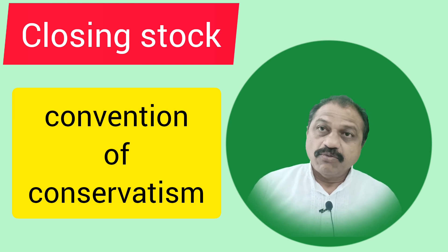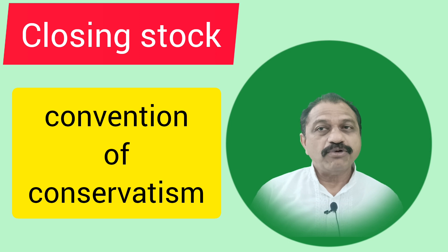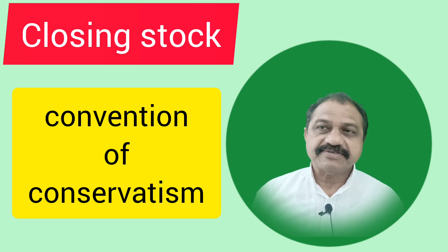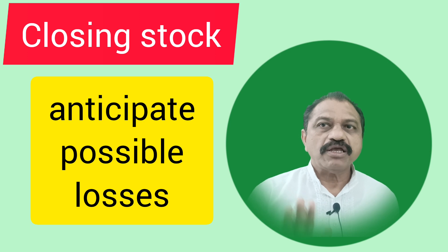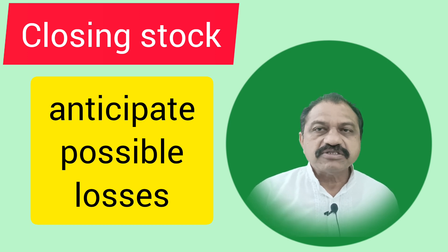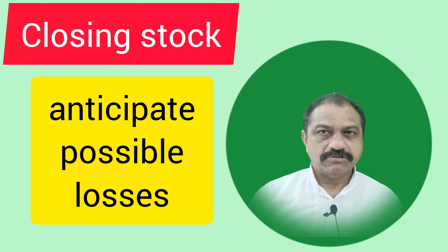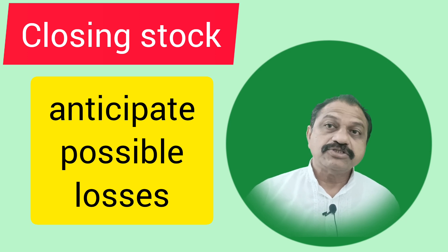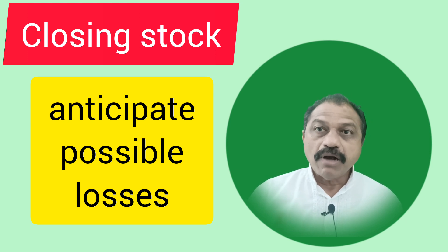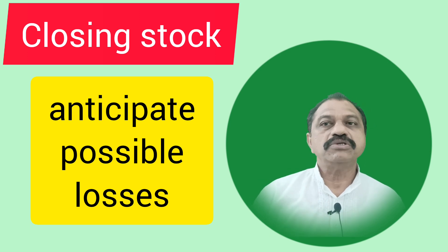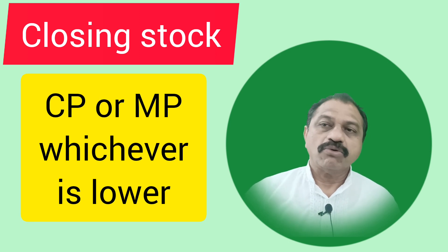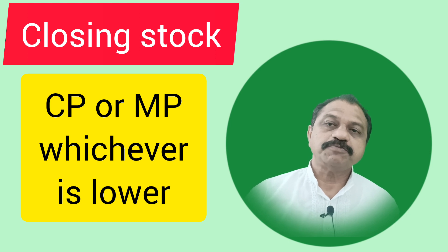The value of closing stock is calculated by following the convention of conservatism. Convention of conservatism says that don't expect to make a profit; expect that you will make possible losses. In other words, conservatism says that anticipated profits are not considered, but anticipated losses should be taken into consideration. By applying this convention of conservatism, closing stock is valued by applying a special rule.